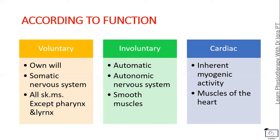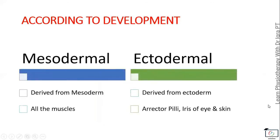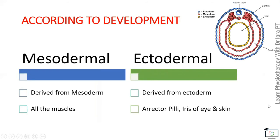According to the development, there are mesodermal and ectodermal muscles. During development, three layers are formed: the ectoderm, the mesoderm, and the endoderm. The mesoderm mainly gives rise to all the muscles, but there are a few muscles that develop from the ectoderm — for example, the erector pili muscles and the iris of the eye — they all develop from the ectoderm, which mainly gives rise to the skin.